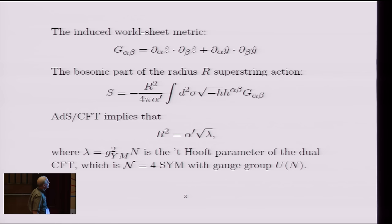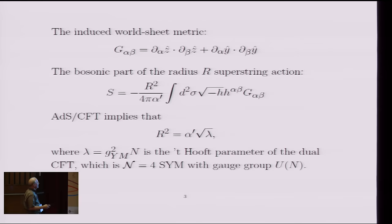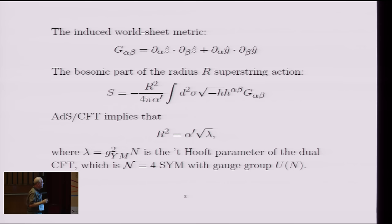So the bosonic part of the superstring action at radius R would be just this induced metric coupled to an auxiliary metric for the world volume. And then we put in the fact that this has radius R by putting in a factor of R squared. So this is the bosonic part of the superstring story.